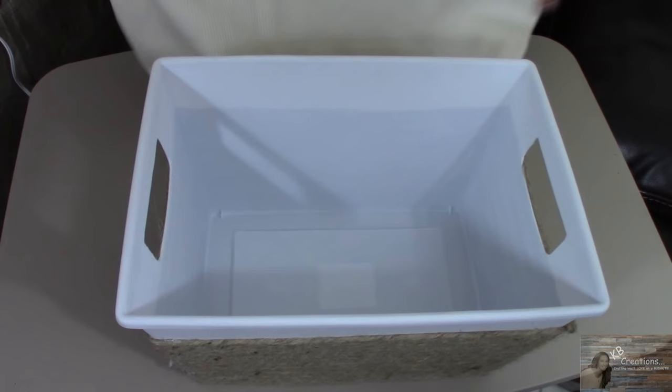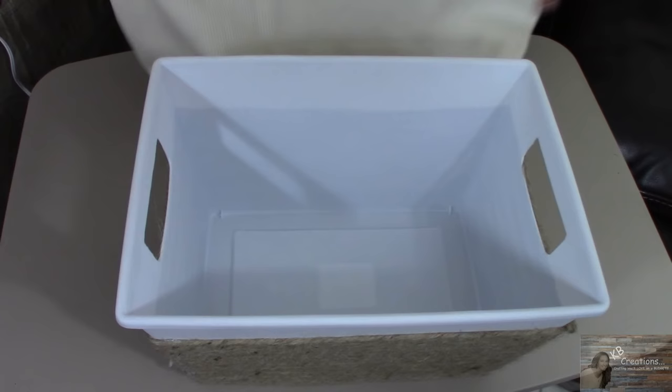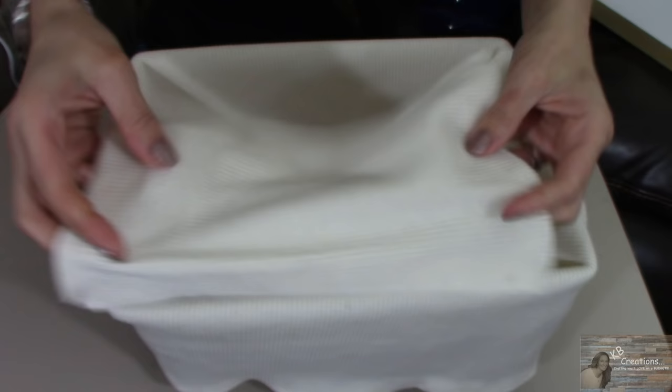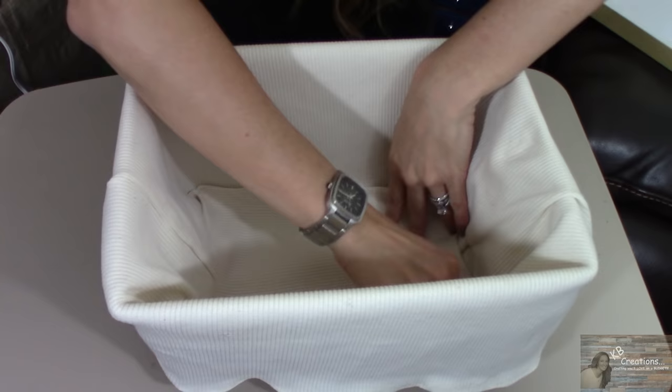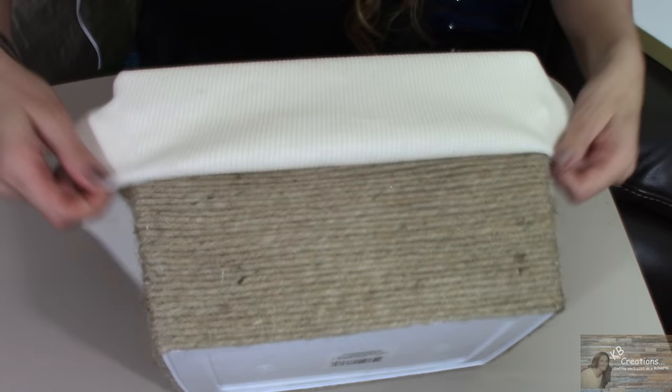Now I'm going to take the fabric that we hot glued together and I'm going to place it inside the bin. Now you can take your last piece of fabric and put it in the bottom. Now I'm going to take the outside of the box and I am going to fold the fabric up and hot glue it so it doesn't come undone.